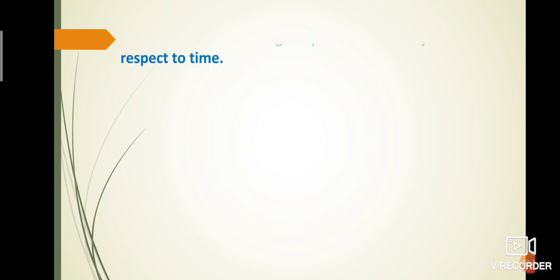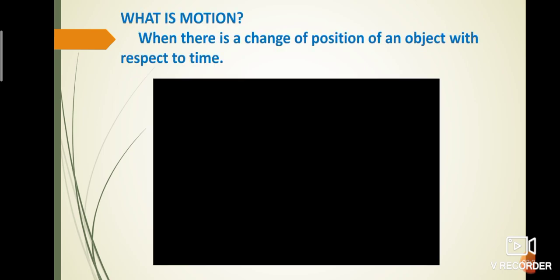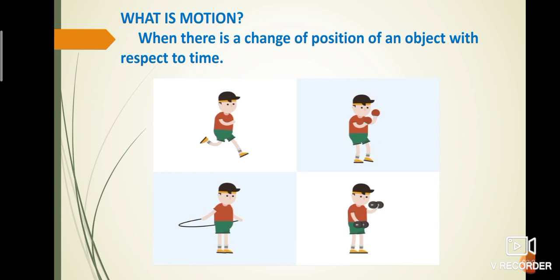Next, what is motion? When there is a change of position of an object with respect to time is called motion. Examples: running, boxing, skipping, weight lifting. From these activities, a person moves from his position. So, it is called motion.